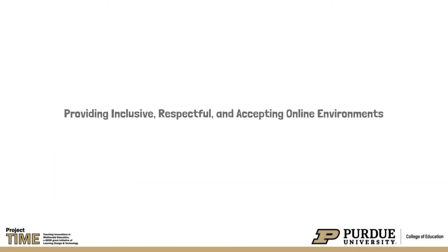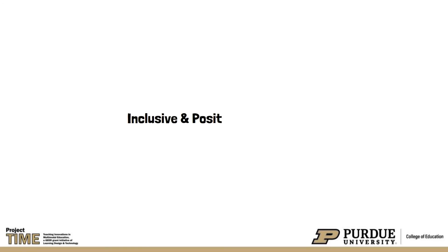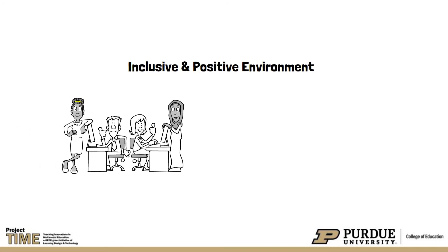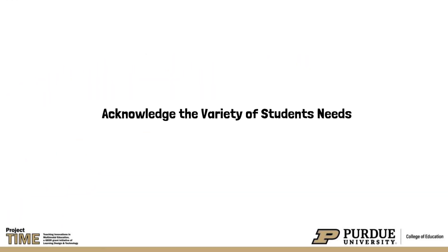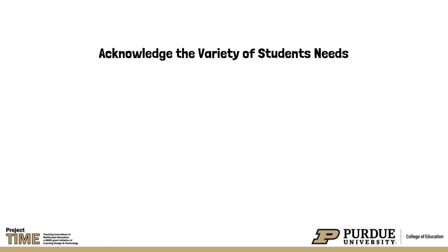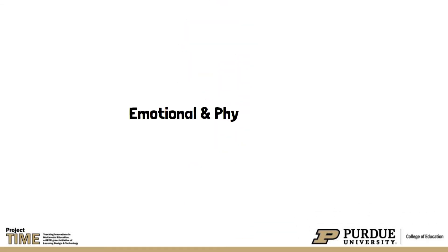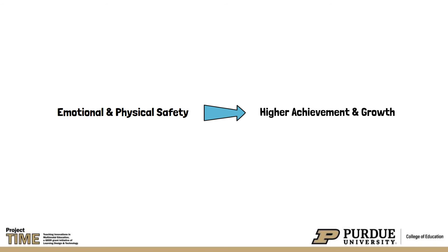Knowing student needs is essential to providing inclusive, respectful, and accepting online classroom environments. An inclusive and positive environment will bolster student engagement and promote a feeling of safety that encourages students to seek support when needed. It is important to acknowledge the variety of student academic, social-emotional, and physical needs that need to be supported to foster their academic success. Students who feel emotionally and physically safe are more likely to have higher achievement and growth.